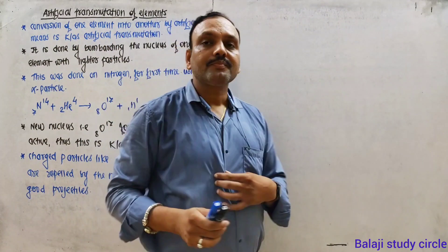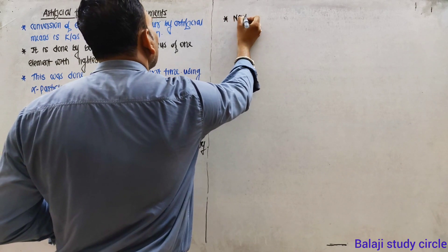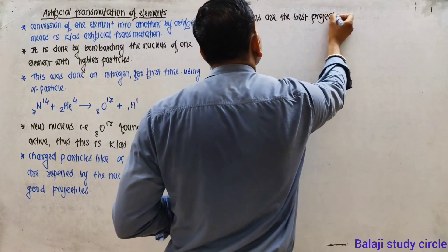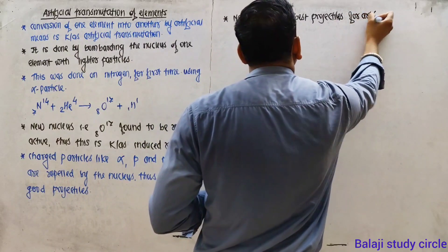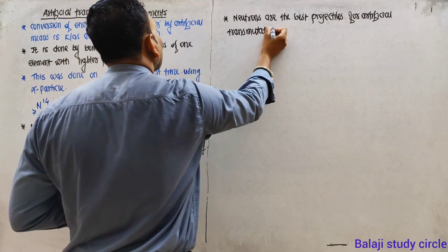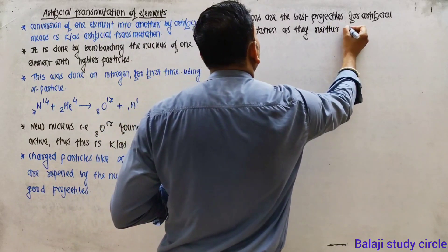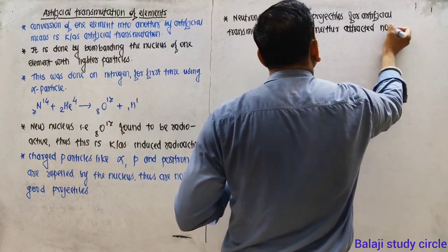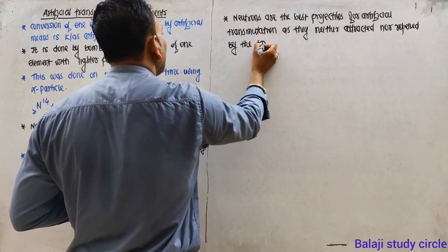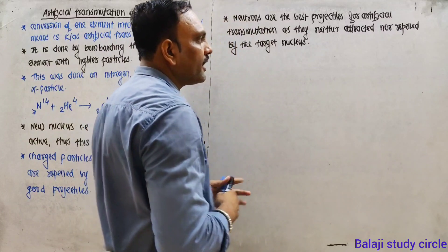Now which particle is a good projectile? Neutrons are the best projectiles for artificial transmutation, as they are neither attracted nor repelled by the target nucleus.